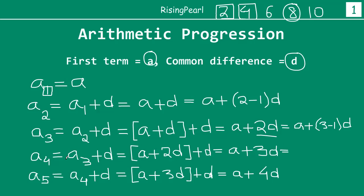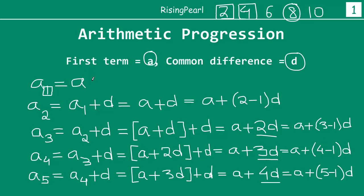Similarly, the fourth term can be written as A plus (4 minus 1) times D — 4 minus 1 is 3, which is 3D. The fifth term we can write as A plus (5 minus 1) times D, because 5 minus 1 is 4, so this will really be A plus 4D, which is what we have. And the first term can be written as A plus (1 minus 1) times D — 1 minus 1 is 0, so it is only A.